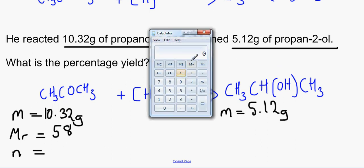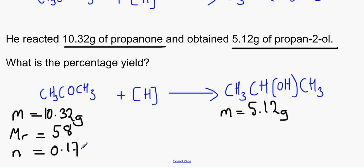Now we can find out the number of moles instinctively by dividing the mass by the molar mass. This is beginning of AS chemistry, so it will be 10.32 divided by 58 and we would get 0.178 moles.